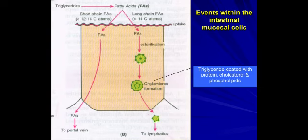Short-chain fatty acids (12–14 carbon atoms) and long-chain fatty acids (more than 14 carbon atoms) are absorbed and triglycerides get coated with protein, cholesterol, and phospholipids to form chylomicrons, which then enter the lymphatics.